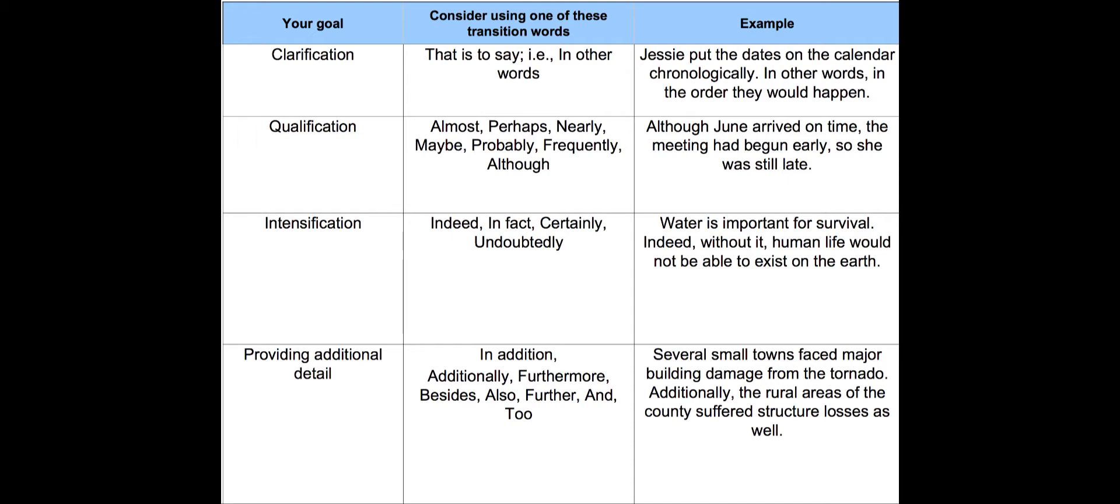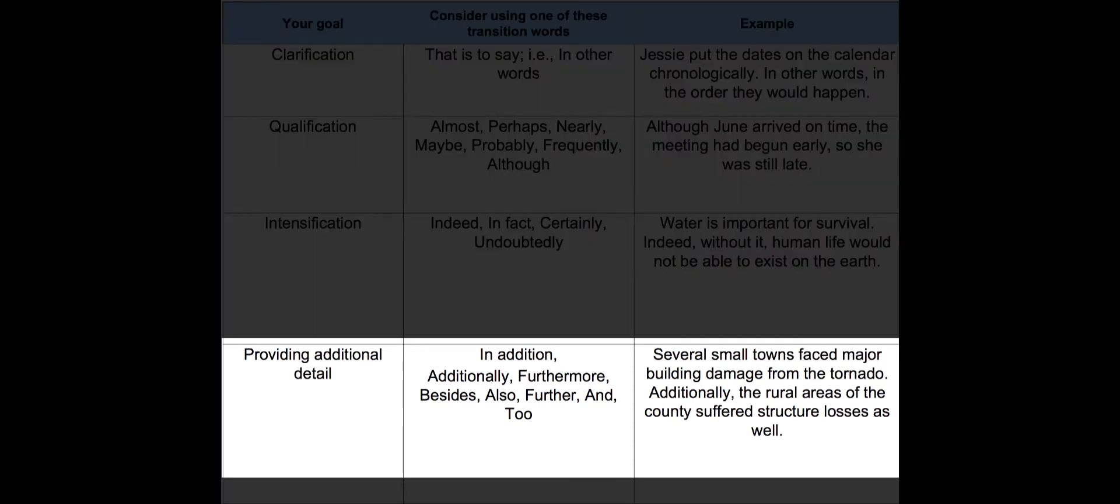If your goal is to provide additional detail, consider: in addition, additionally, furthermore, besides, also, further, and too. Example: Several small towns faced major building damage from the tornado. Additionally, the rural areas of the county suffered structural losses as well.